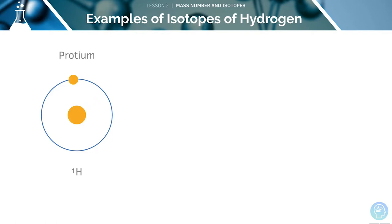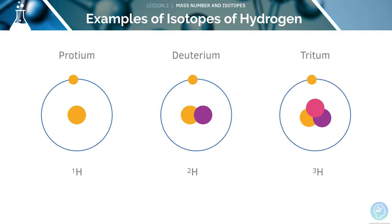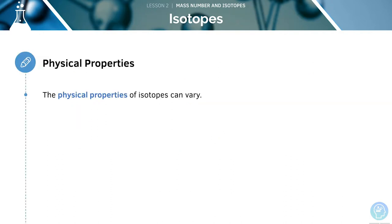We'll now look at some examples of isotopes using hydrogen — you don't need to memorise these for the exam. The first isotope is protium. The second isotope of hydrogen is deuterium, which has two neutrons. The third example is one with three neutrons. Although the number of protons remains the same, the number of neutrons increases across these isotopes.